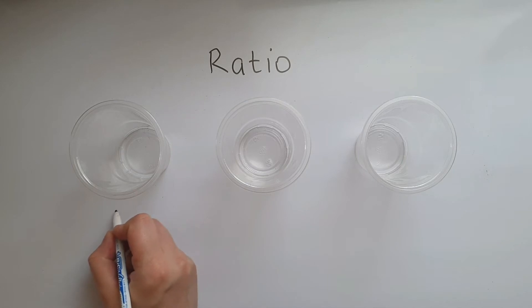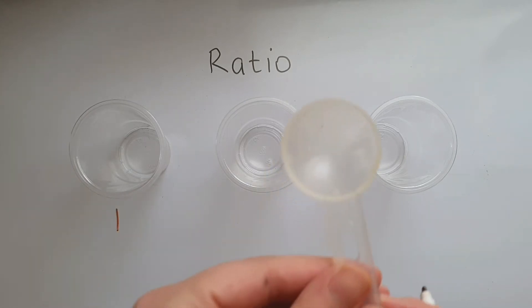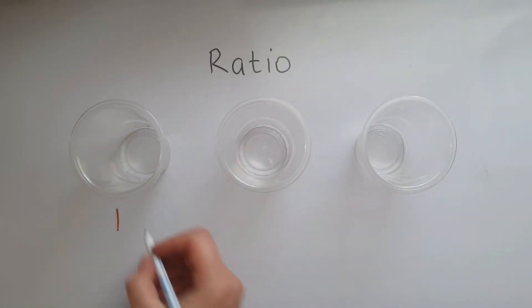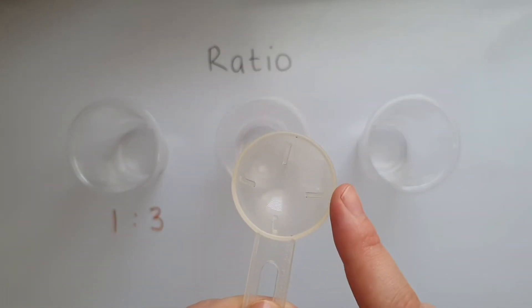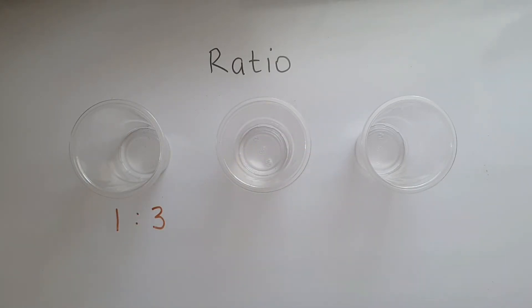For the first one, we're going to put one spoonful of squash and three spoonfuls of water. You need to use the same unit to measure both the squash and the water, otherwise the ratio won't work. Whether you're using cups, spoonfuls, or another container, you need to use the same one to measure both ingredients. That's the idea.